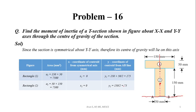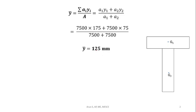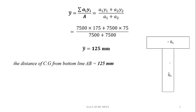We can get y-bar to be 125 mm. This is the centroid of the whole figure. The centroid of the entire T-section lies at a distance of 125 mm from the base.